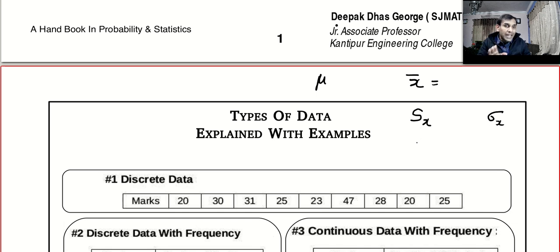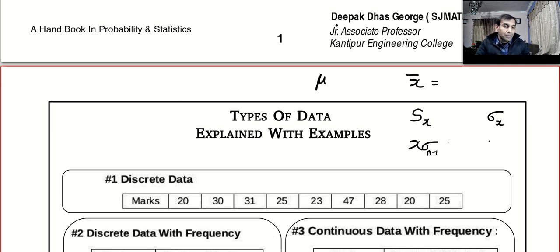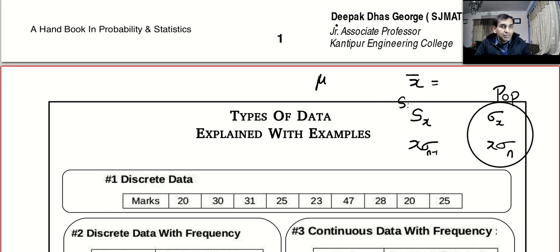In very old calculators they use the notation x-sigma-n-minus-1. If you are using that old calculator please comment below so I can include those steps in coming videos. The old calculator also uses x-sigma-n for population. So note it down: sigma x is population standard deviation and sx is for sample.